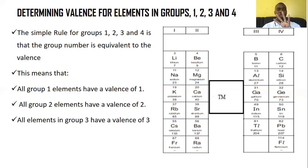So you need to take note of this rule. Determining the valence for groups one, two, three, and four, just follow the group number. So the group number is the valence of that particular element.